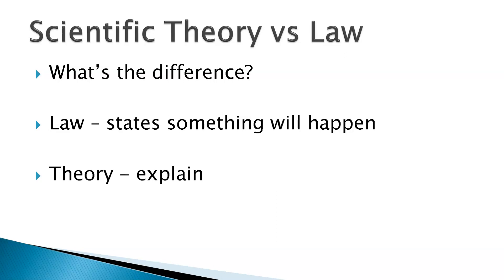Some scientific vocabulary to understand correctly: theory versus law. A law just states something will happen — like the law of gravity or the law of thermodynamics. Theories are more complicated; they explain more deeply because they aren't completely provable in every respect, but they are backed by the laws of science. For example: the theory of evolution, theory of plate tectonics, the cell theory, the big bang theory. They're backed by a lot of evidence, but there are things we don't fully understand about them. That's why they're a theory and not a law.